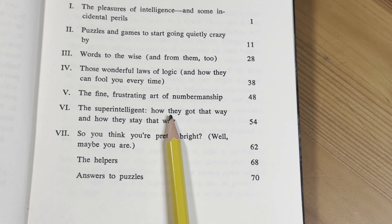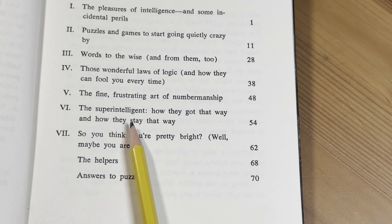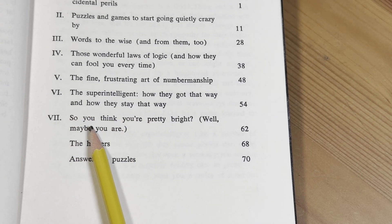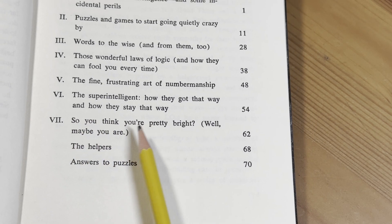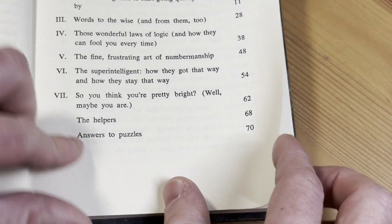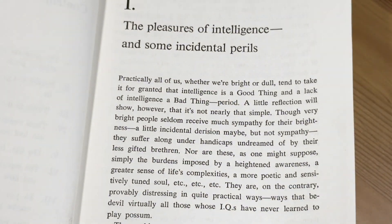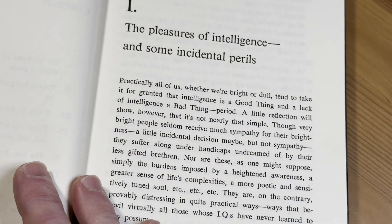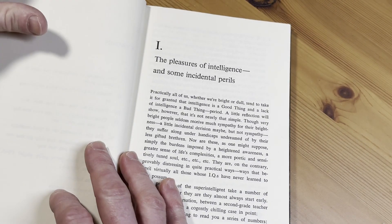The super intelligent. How they got that way and how they stay that way. So you think you're pretty bright. Well, maybe you are. And then the helpers. And you have answers here to the puzzles. Pretty cool. I'll try to leave a link in the description to this book, in case you want to pick up a copy.